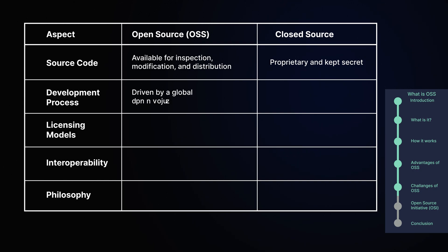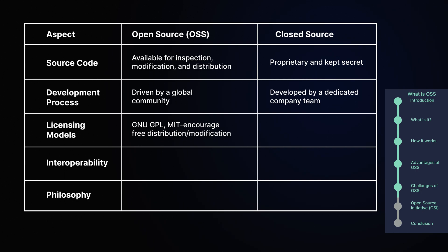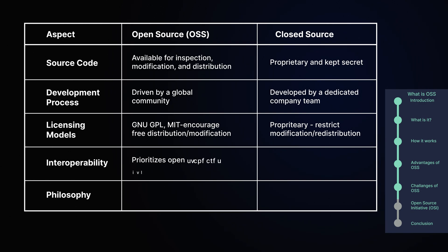Development process: OSS is driven by a global community, while closed-source software is typically developed by a dedicated team within a company. Licensing models: OSS uses licensing like GNU GPL or MIT to encourage free distribution and modification. Closed-source software uses proprietary licenses that restrict modification and redistribution. Interoperability: OSS prioritizes open standards and interoperability, while closed-source software may prioritize vendor lock-in strategies.